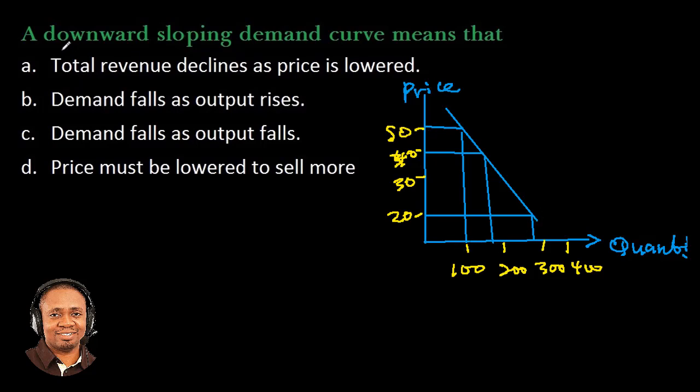Alright, so let's go back to the question. A downward sloping demand curve means that total revenue declines as price is lowered. I wouldn't agree with that because if the price is lowered, it will definitely increase the revenue that comes in. So this is not what the downward sloping demand curve represents.